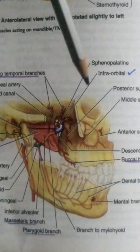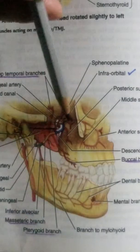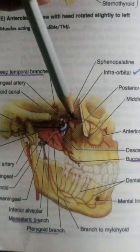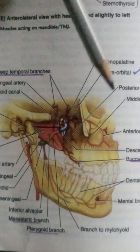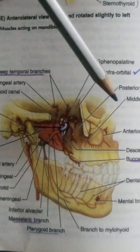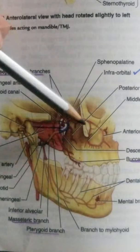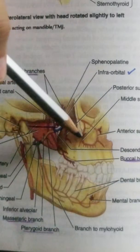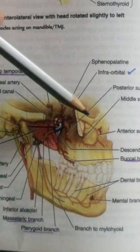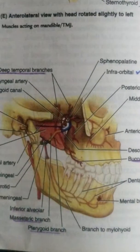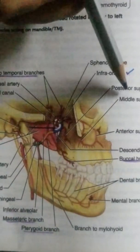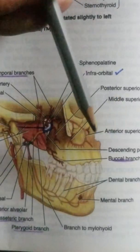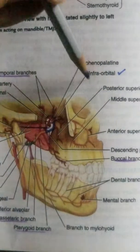The infraorbital artery runs from the inferior orbital fissure, then goes into the infraorbital groove, canal, and foramen, and opens onto the face. It gives two branches: the anterior superior alveolar and the middle superior alveolar. The middle superior alveolar supplies the premolars, and the anterior superior alveolar supplies the incisors and canines.